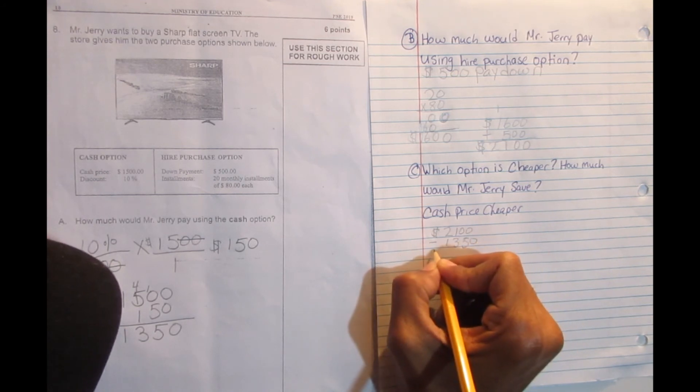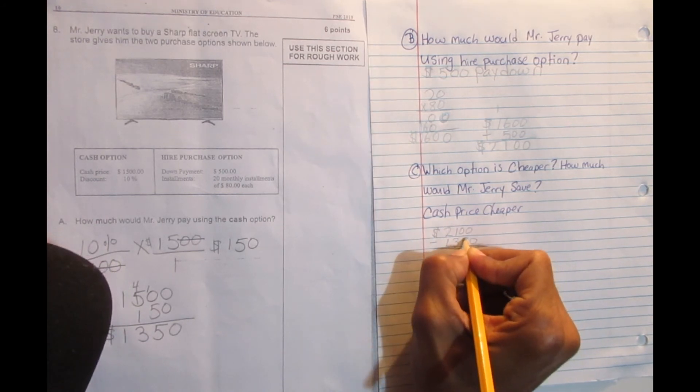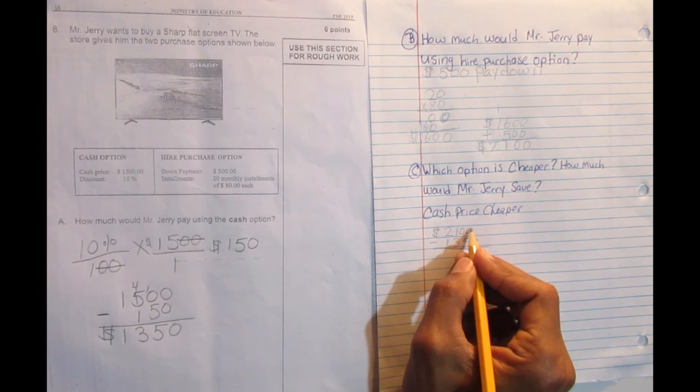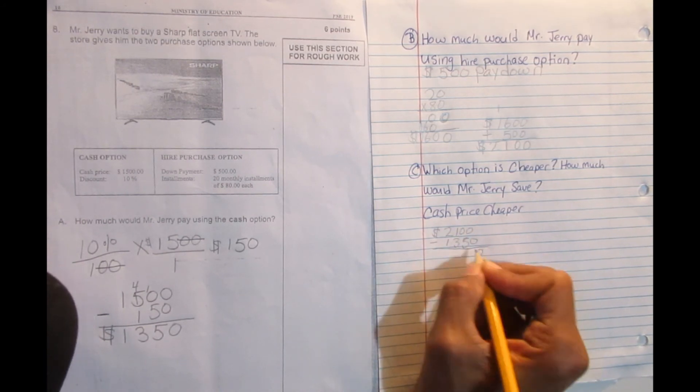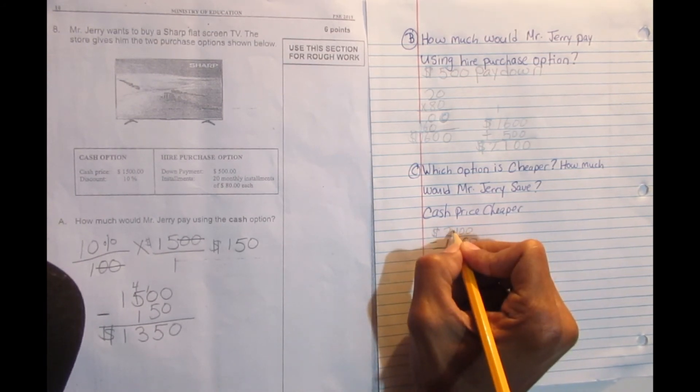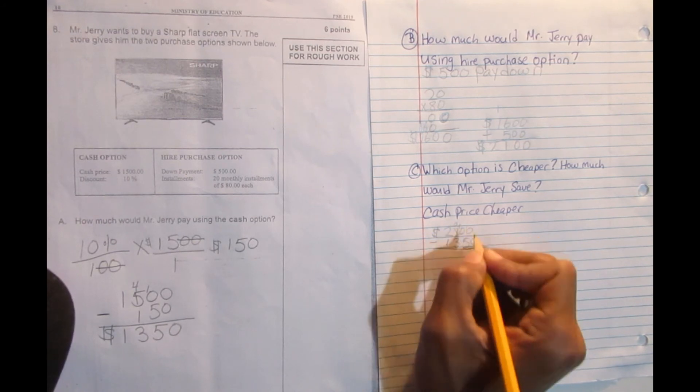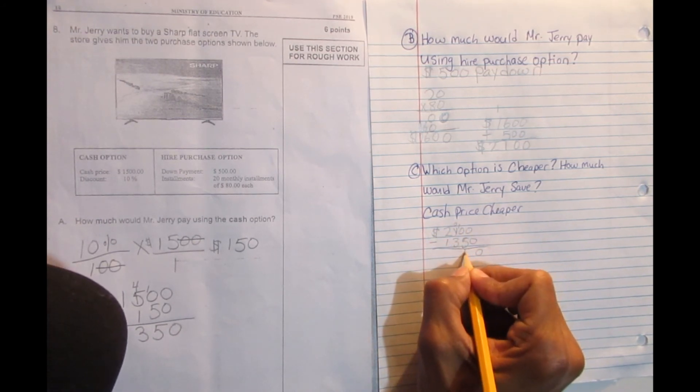When I minus, this will tell me how much I save. 0 take away 0 is 0. 0 take away 5 can't, borrow from the 1. The 1 becomes 0. This becomes 10. 10 minus 5 is 5.